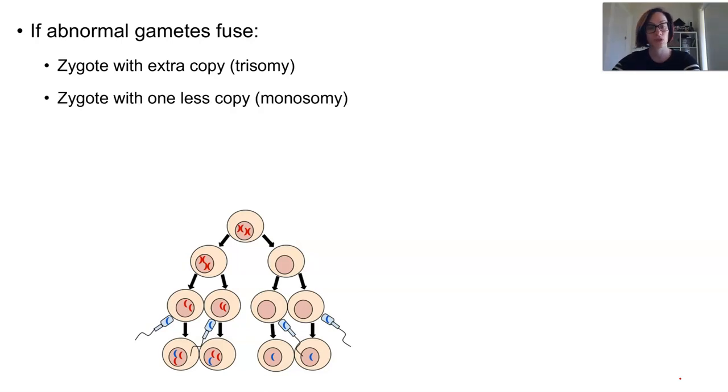Or we can have a gamete with none of this chromosome fusing with another with one, leading to only one copy of the chromosome, which is known as monosomy. This is usually compatible with life sometimes, but there is a very delicate balance between having too much genetic information and having not enough. Only some aneuploidies are compatible with life.